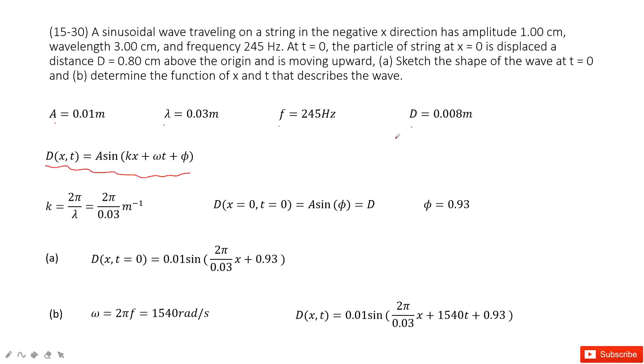Now we need to find the shapes for waves at t equal to 0. When t equal to 0, this term disappears. It becomes a sin kx plus phi. So it looks like we only need to know a, k, and phi. We are done.